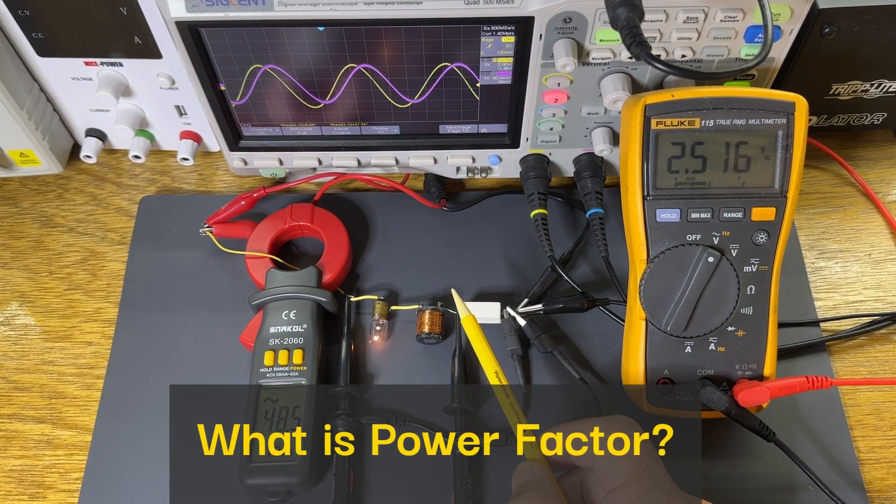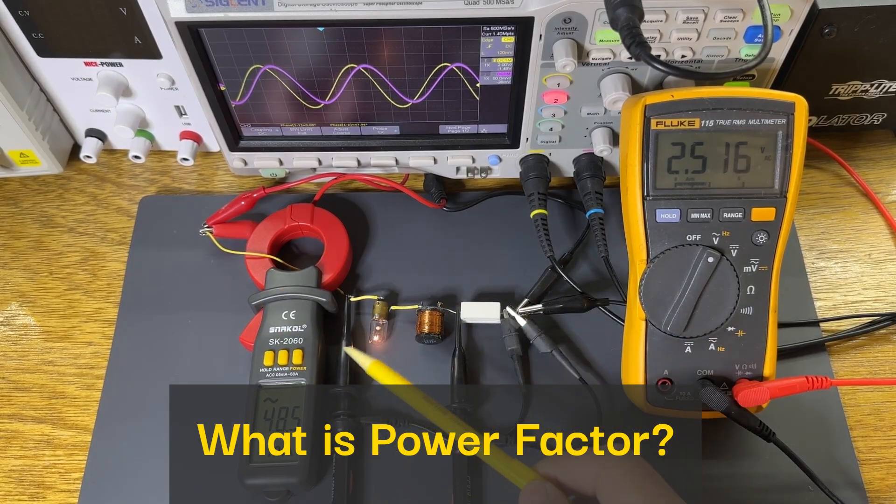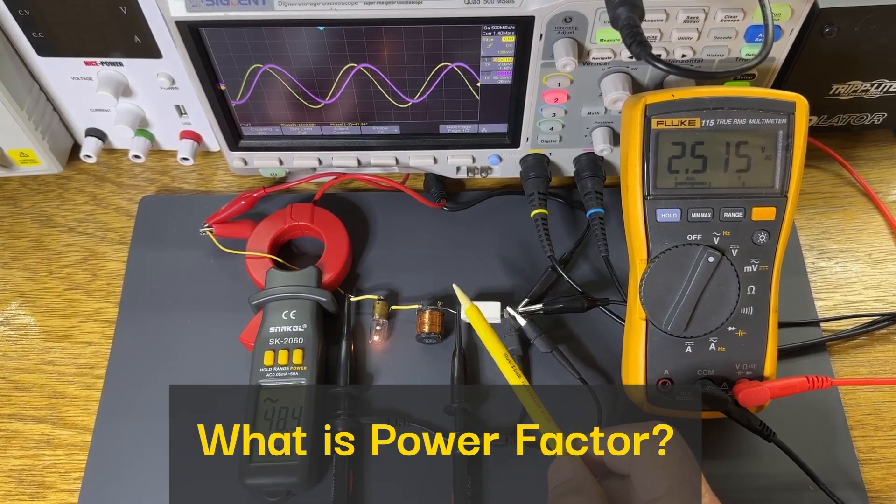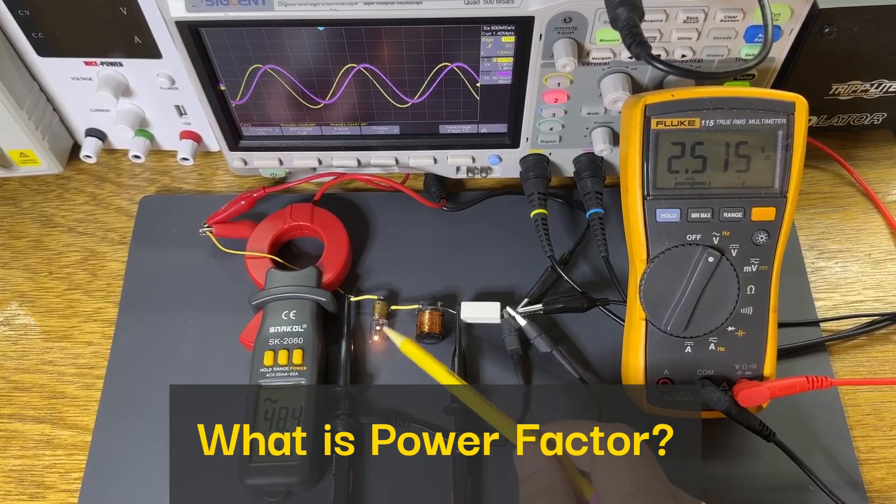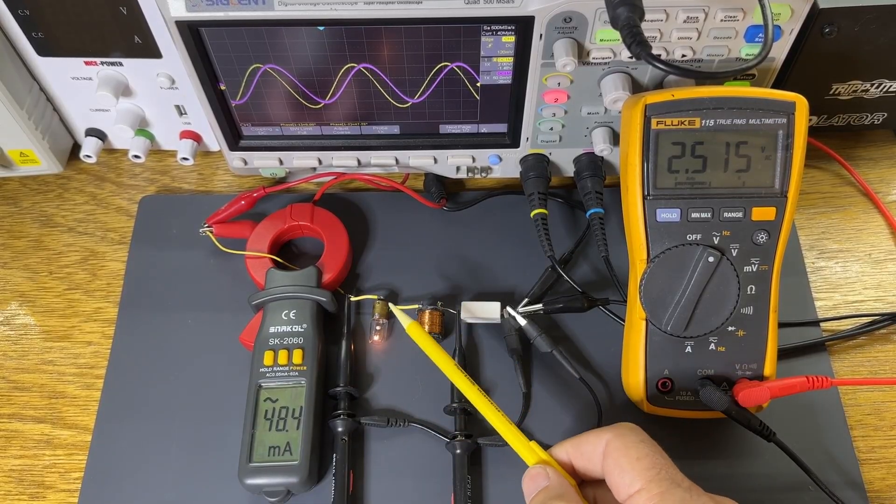So what is power factor? It is simply how much of the power that you draw from the supply actually does useful work. It is the ratio of real power to apparent power. In a perfect circuit, like a resistive light bulb, the current and voltage are perfectly in phase and the power factor is 1.0 or 100% efficient.